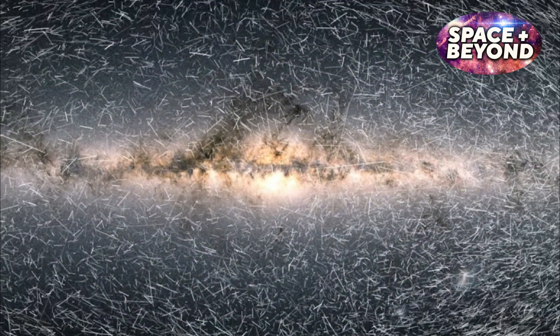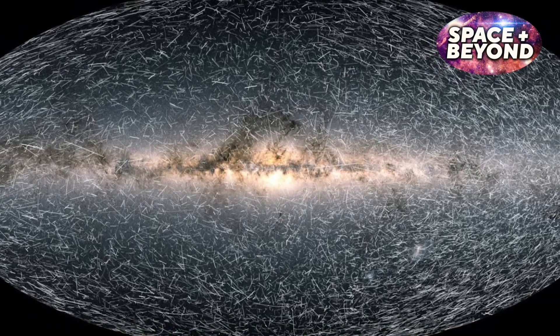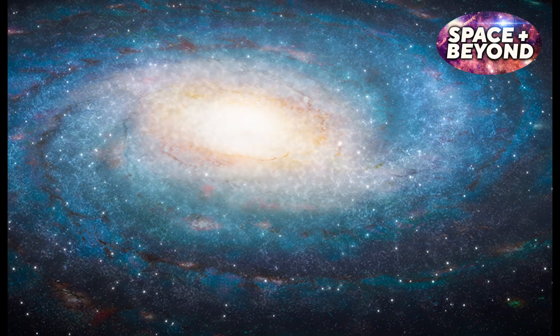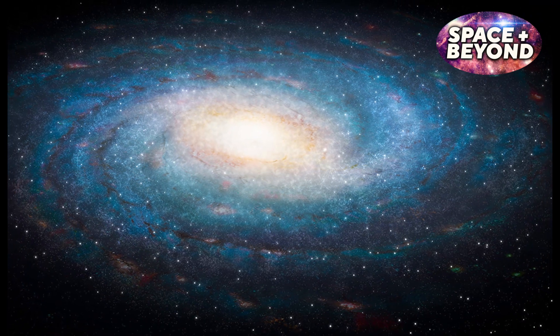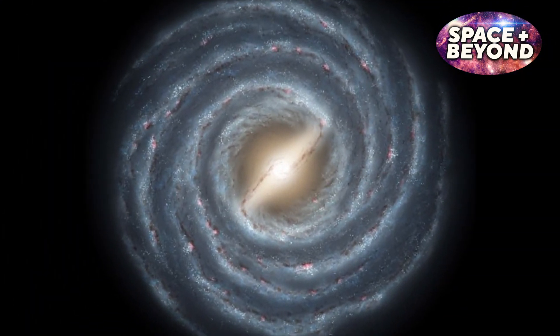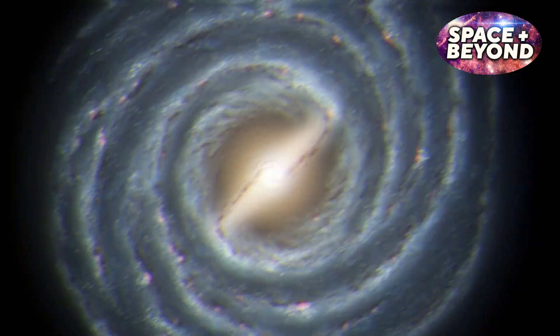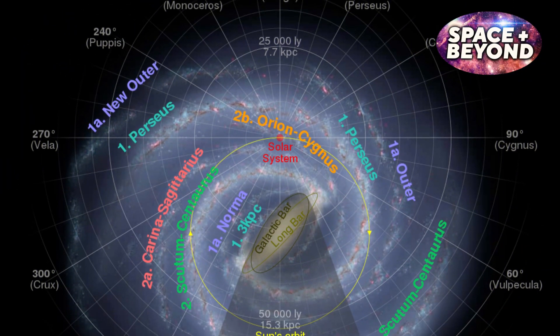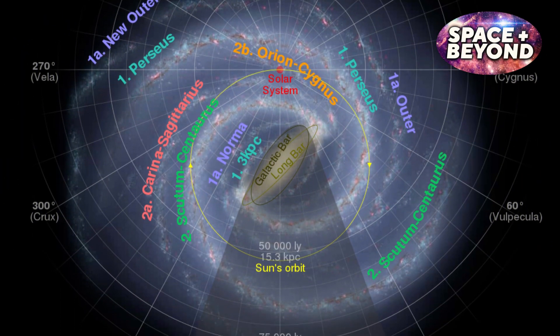By measuring the movements of stars in and around them, Gaia has been able to determine precisely how these galaxies are structured. This includes determining the masses of the spiral arms and their rotation speeds. Thanks to this data, we now have a much better idea of what causes these structures to form in the first place.